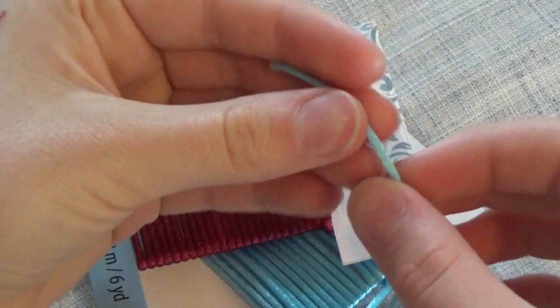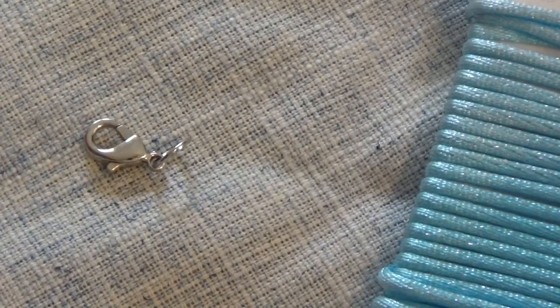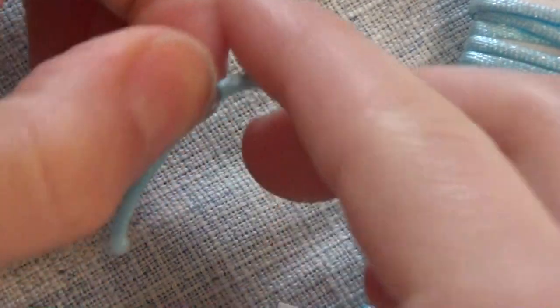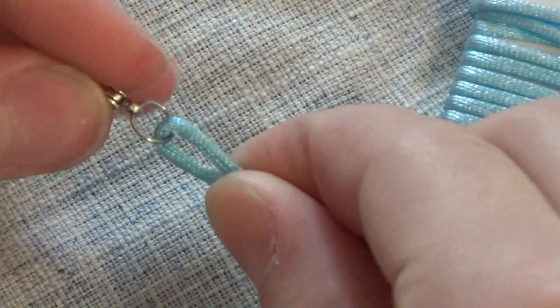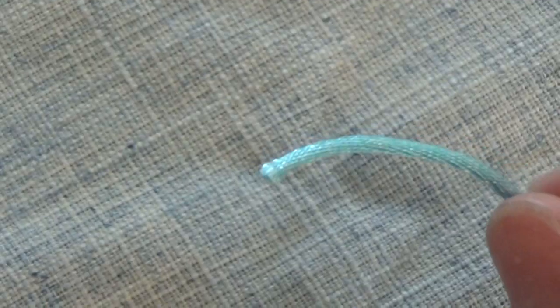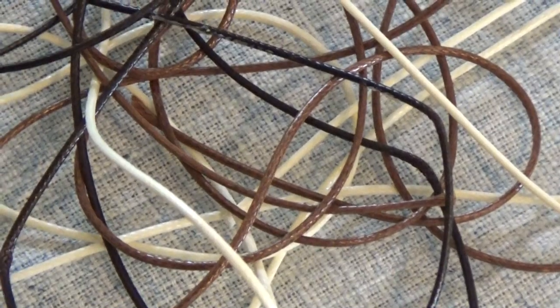If you don't have embroidery floss or you want a quick resolution, you can try different types of string you might have around your house. This is a satin knotting cord. And if you were to just fold it and glue it over a jump ring and lobster clasp like this, then it could look a lot like a lead rope. You just have to seal the other end.